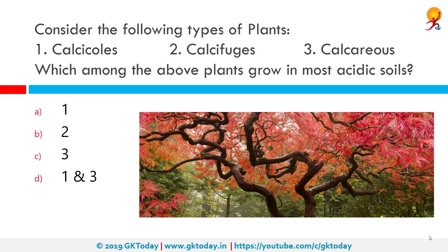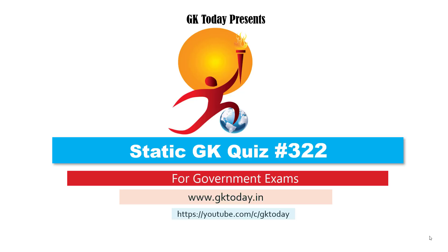Consider the following: calcicols, calcifuges, and calcareous. Which among these plants grow in the most acidic soil? Calcifuges grow in the most acidic soil. It is a plant that does not tolerate alkaline soil. The word is derived from the Latin meaning 'to flee from chalk', because chalk is alkaline. That is all for today's quiz — until the next video, goodbye.